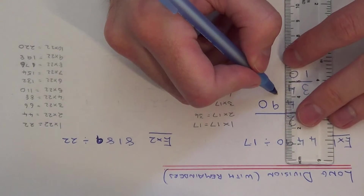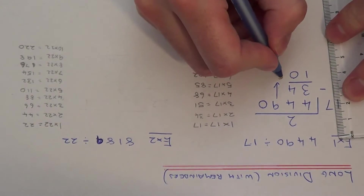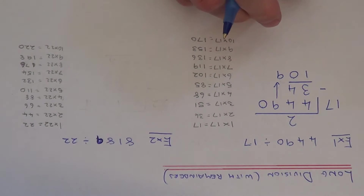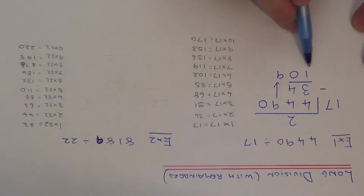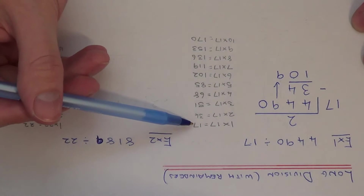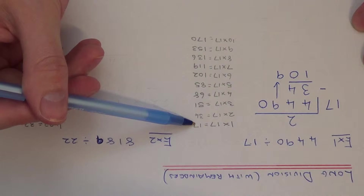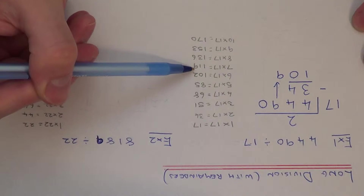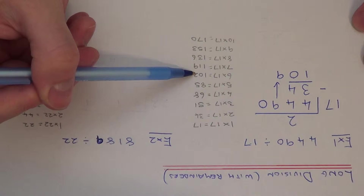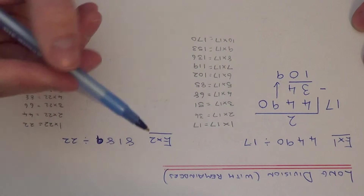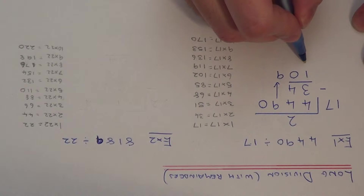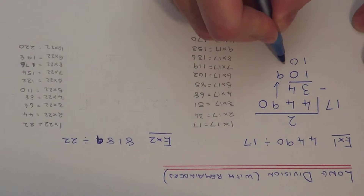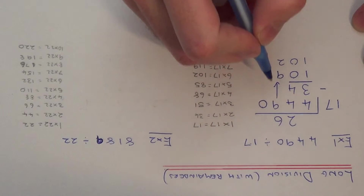Now copy the 9 down to the next line to make 109. Next we need to work out 109 divided by 17. Go through your multiples of 17: 17, 34, 51, 68, 85, 102, 119. We don't want to go past 109 so 102 is our best one — that's 6 times 17. Write 102 underneath the 109 and put the 6 at the top.